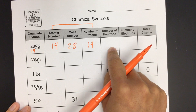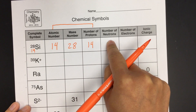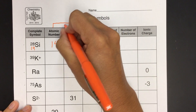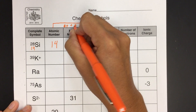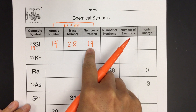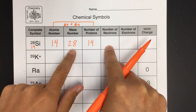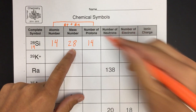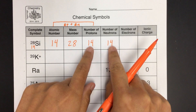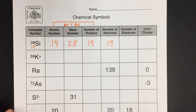Now that I know the number of protons, I can figure out the number of neutrons. The mass number is the number of protons plus the number of neutrons. So if I know there are 14 protons, how many neutrons do we need for these two to add up to 28? Hopefully you figured out 14. So we have an equal number — 14 plus 14 gives us a mass number of 28. It's not always going to be the case, but that makes sense here.